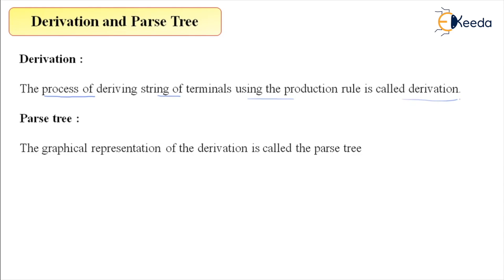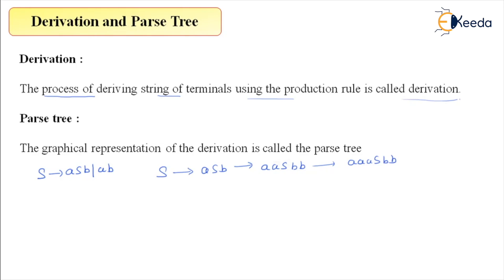Now let's dig into derivation. Suppose we have a simple grammar with a recursive production rule. I can apply the rule: A derives B, then double A derives double B, then triple A derives triple B, and one more time to get four occurrences of A and four occurrences of B, terminating the derivation.